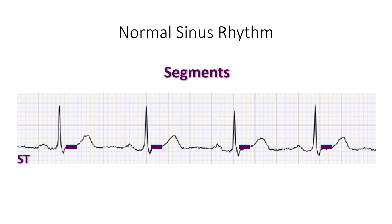Another important segment is the ST segment, which represents the electrical events between ventricular depolarization and repolarization. When a patient is experiencing a myocardial infarction or ischemia, usually the affected ventricular tissue begins to display alterations in the ST segment. When the ST segment is depressed or placed downward, this corresponds to ischemia. During ST segment elevation, this corresponds to a transmural or through-the-wall infarct of ventricular tissue. We will discuss this more later in the ischemia and MI section.